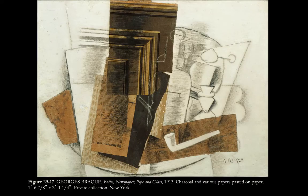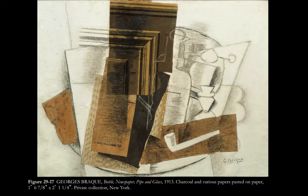Here are some other cubist artworks by Picasso's contemporaries. This is Braque's image of a bottle, newspaper, pipe, and glass. A piece of newspaper has actually been glued directly onto the canvas, creating a certain flattening where everything is shown at a flat perspective so you can see the most important elements of each object, and the actual object itself has been incorporated into the artwork. So we have artists thinking not only about different ways of representing reality, but of different ways of working with material.